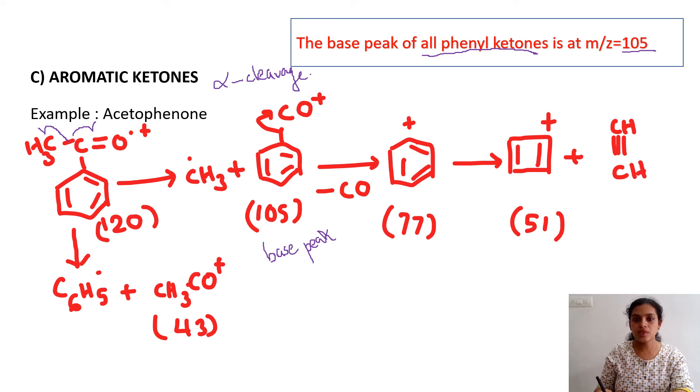From here, carbon monoxide is eliminated to give you a phenyl carbocation. And from here, you might be remembering in the case of aldehydes also we have discussed this one, in the case of phenols also. An acetylene molecule is expelled like this to give you a species with m/z value 51. In the previous examples, the base peak was at 51, but here in the case of aromatic ketones, the base peak is at 105. Please remember that difference.